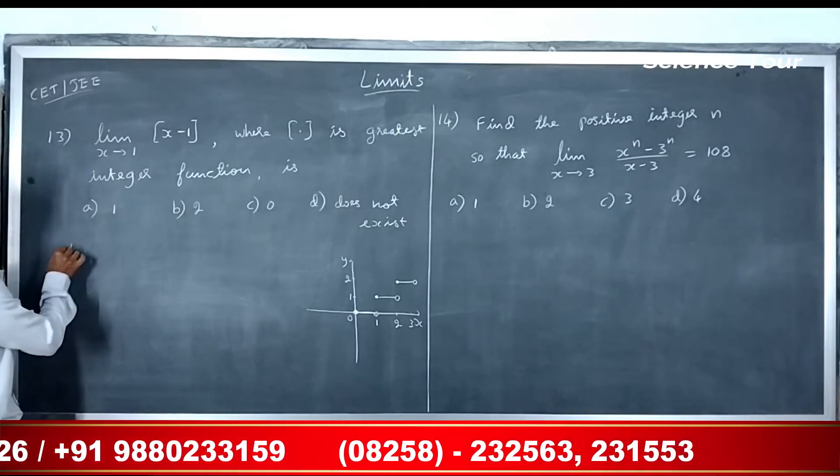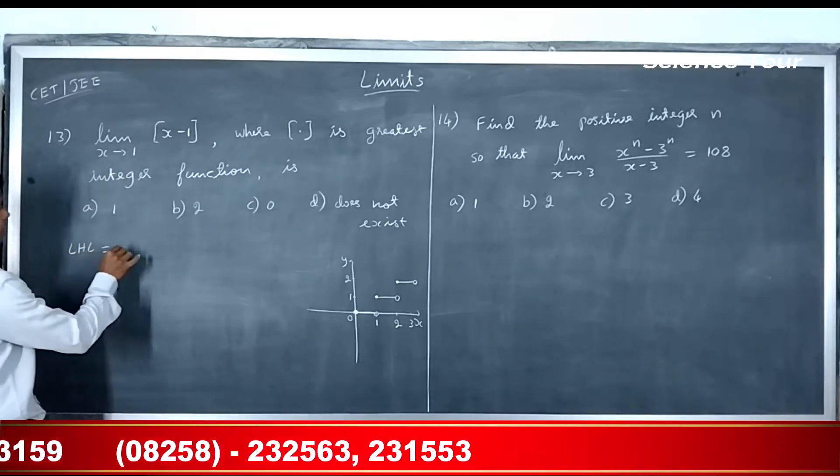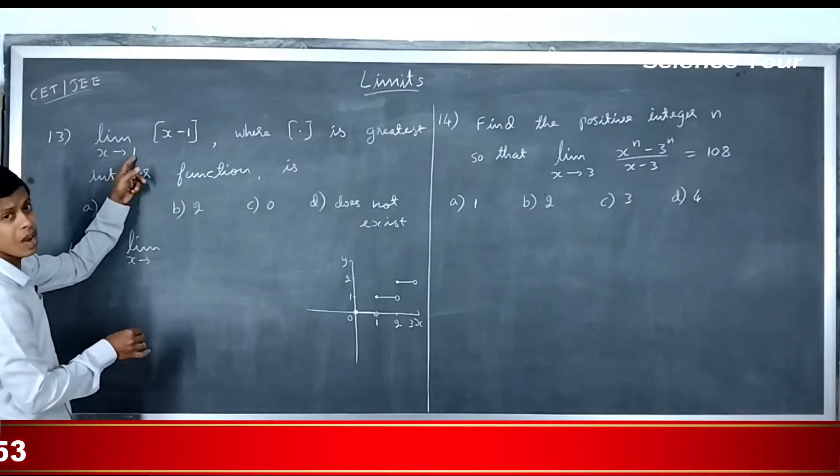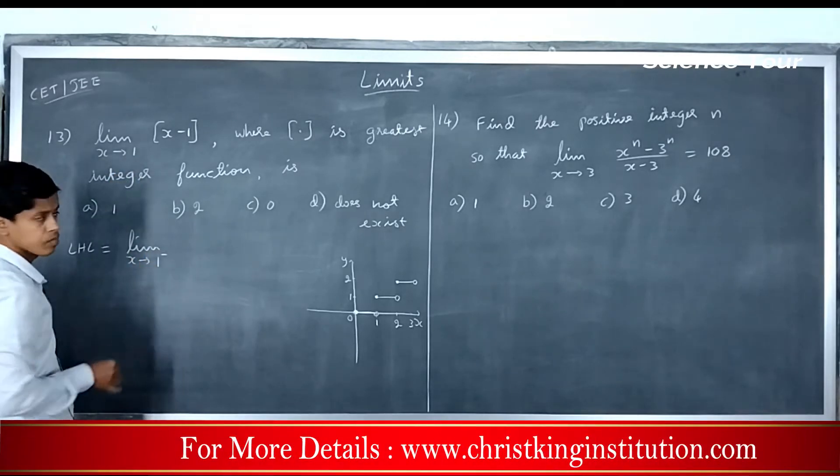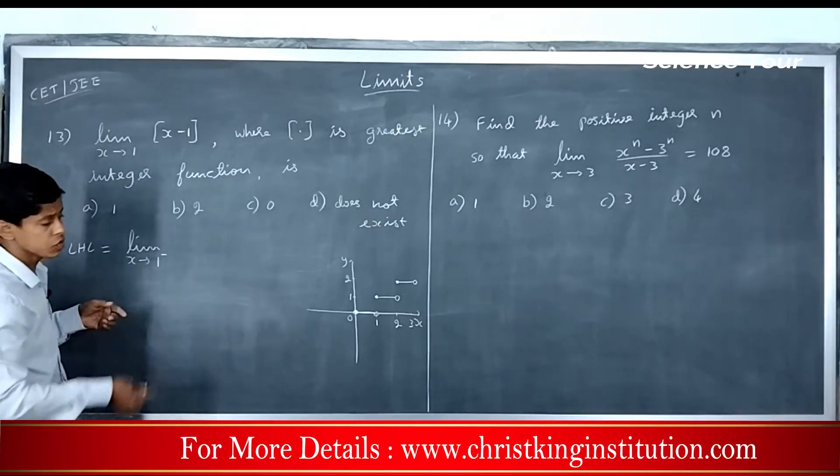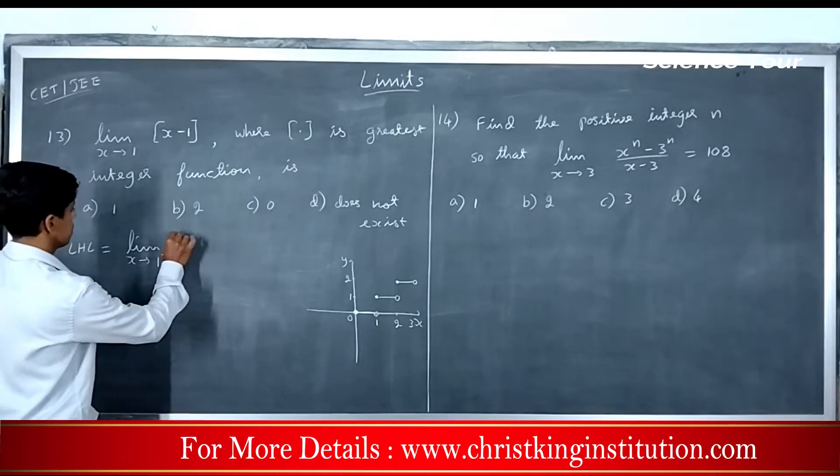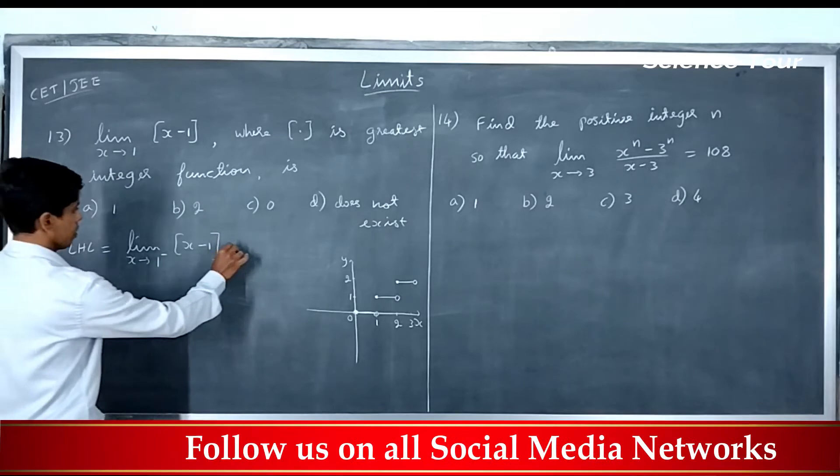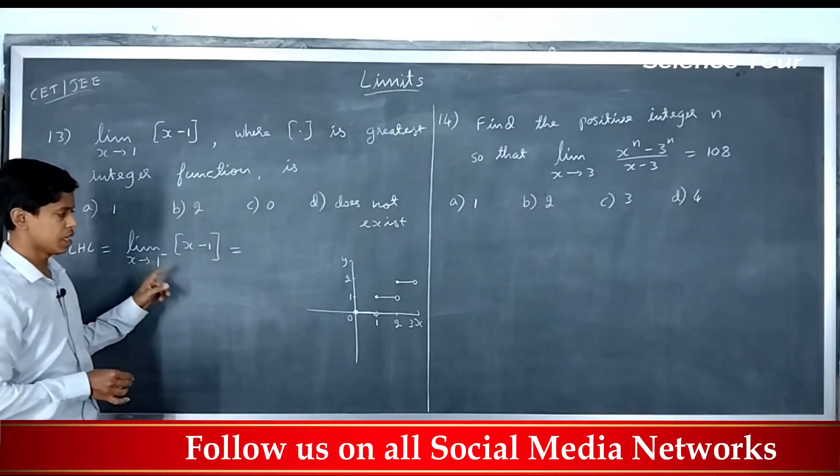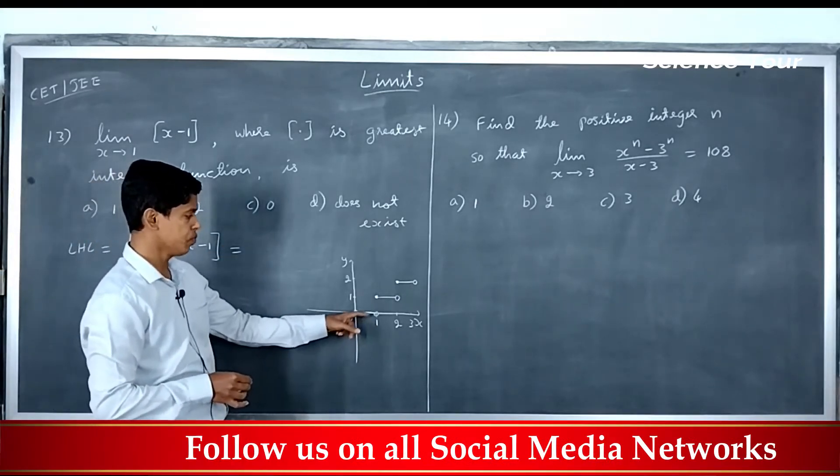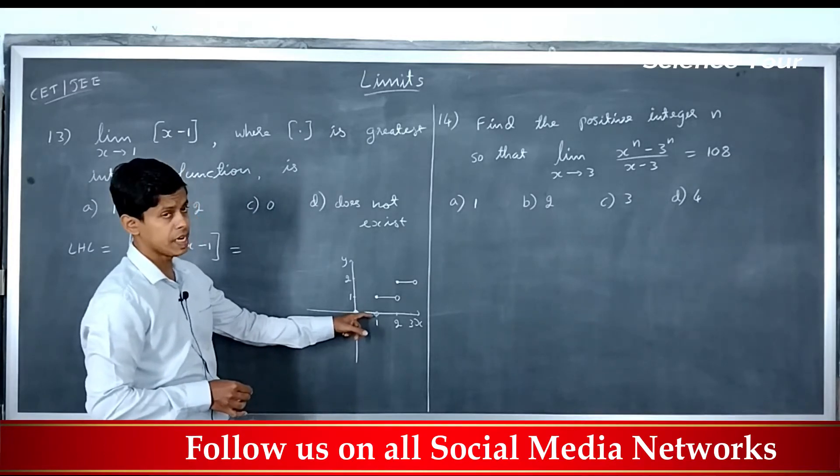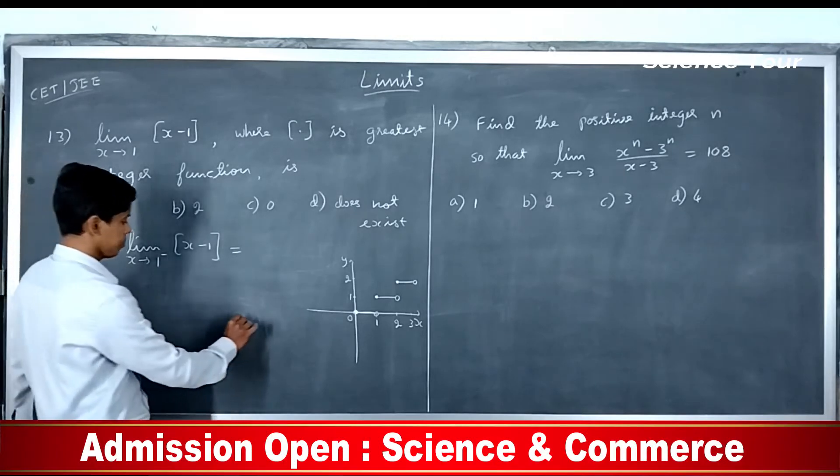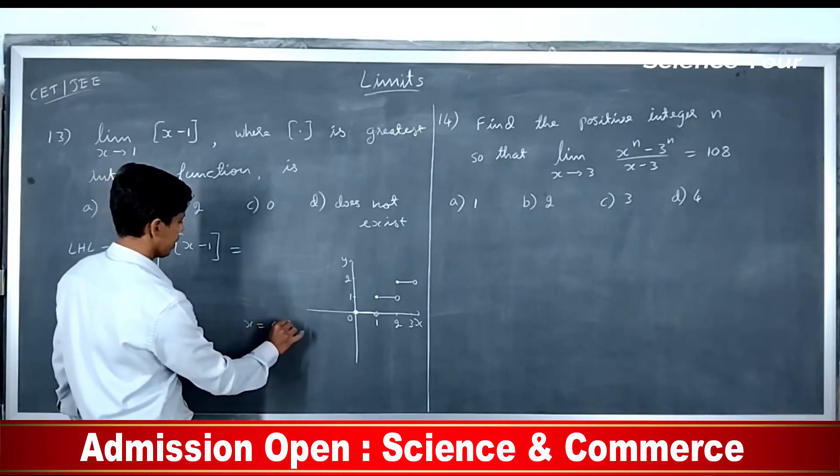So first let us solve the left hand limit, that is limit x tends to 1 minus. 1 minus is for the values which are less than 1, and greatest integer of x minus 1. Now, what is the meaning of 1 minus? 1 minus is all the values which are less than 1. Let us imagine this is 0.9. So I will take x as 0.9.